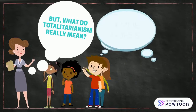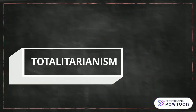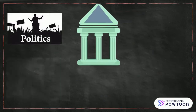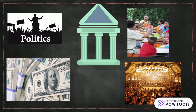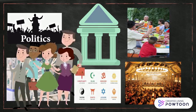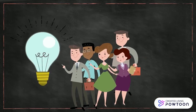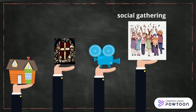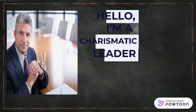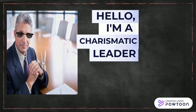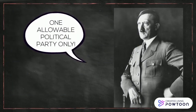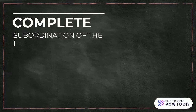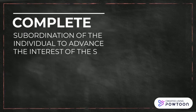But what does totalitarianism really mean? Totalitarianism is a form of government that exercises absolute political, economic, social, cultural, and spiritual control over its subjects — even people's private thinking must conform. A charismatic leader or dictator who controls the one allowable political party usually heads it. This form of rule requires complete subordination of the individual to advance the interests of the state.